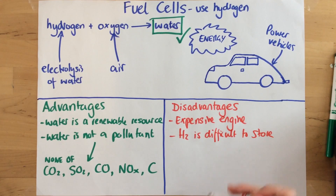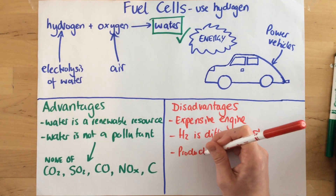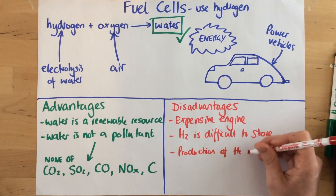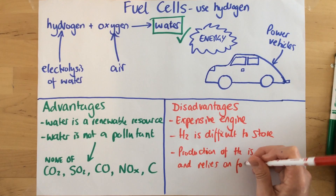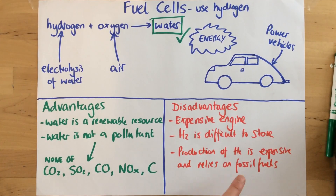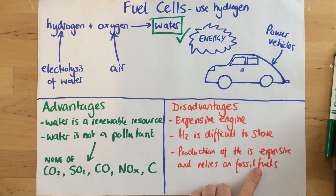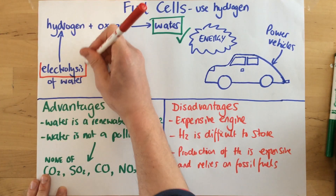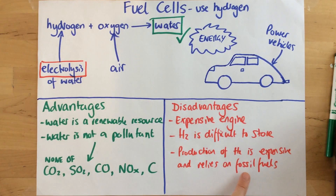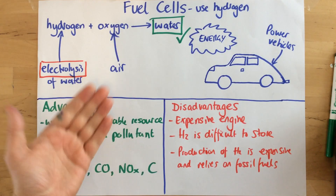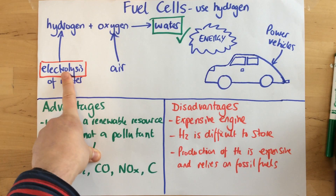Finally, the production of hydrogen is expensive and relies on fossil fuels. This is a big problem because one of the advantages is that it's renewable and we're not producing the gases we normally get from fossil fuels — but when we produce the hydrogen in the first place, we are using fossil fuels. The reason for that is we need to carry out electrolysis, and electrolysis reactions require a lot of energy that is more than likely going to come from burning fossil fuels, which does release these gases. So currently, using our current energy structures, we're still going to have a problem when it comes to the production of hydrogen.